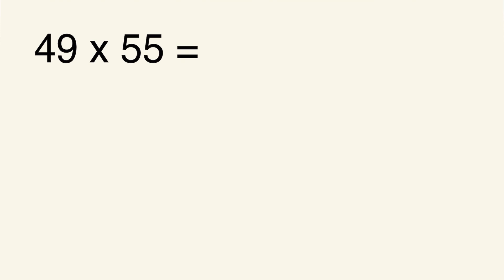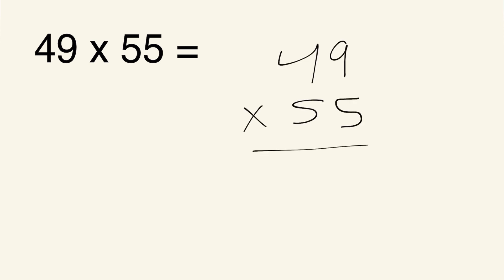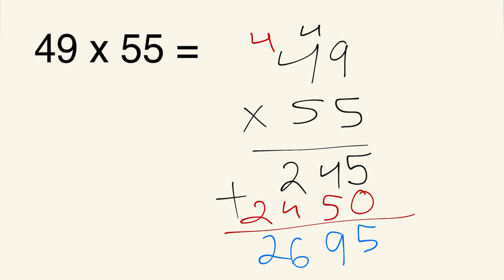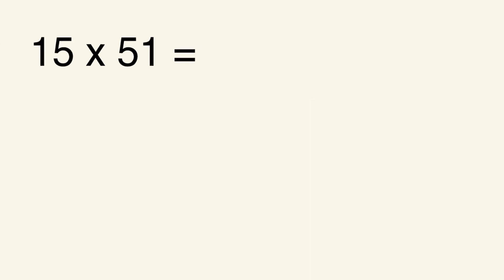Next: 49 times 55. First the ones digit: 5 times 9 is 45 — write the 5, carry the 4. Then 5 times 4 is 20, plus 4 is 24 — giving 245. Add the 0, then again 5 times 9 is 45 — write the 5, carry the 4. Then 5 times 4 is 20, plus 4 is 24 — giving 2,450. Adding 245 plus 2,450: 5 plus 0 is 5, 4 plus 5 is 9, 2 plus 4 is 6, bring down 2. The answer is 2,695.